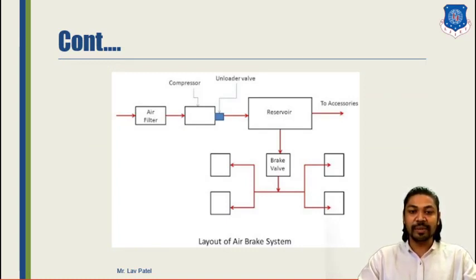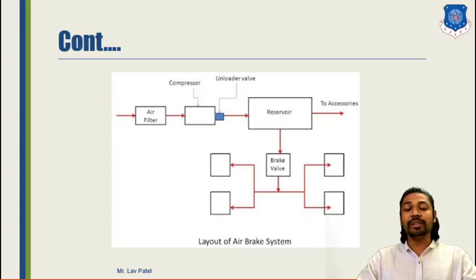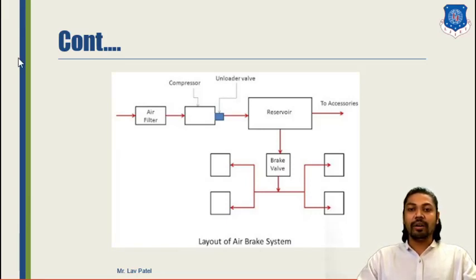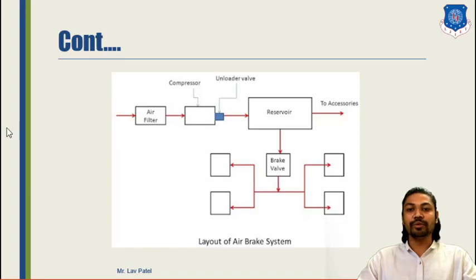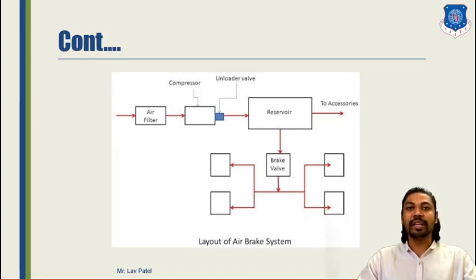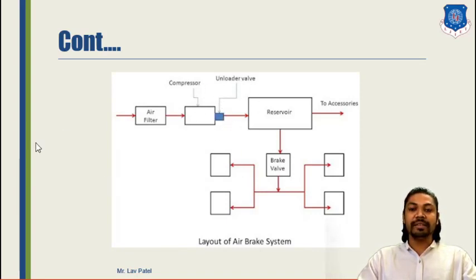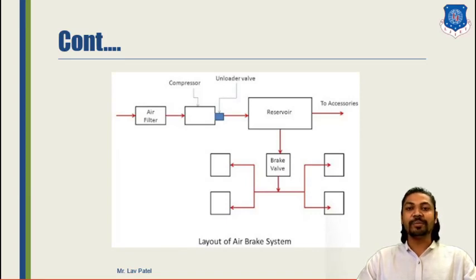Here is a schematic diagram for the air brake or pneumatic system. You can see that an air filter is required because air contains different dirt particles or sand particles, so to prevent the system from breaking down we use an air filter at the front. After the air filter, the compressor is there, run with the help of engine power. After the compressor, an unloader valve is there — the main principle of the unloader valve is to build pressure in the compressor.